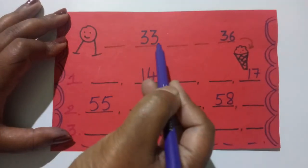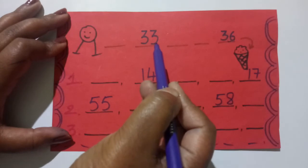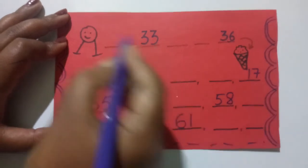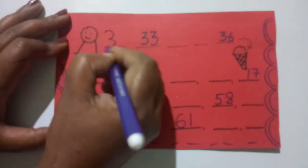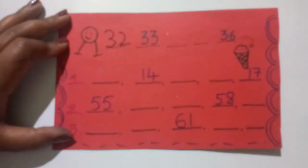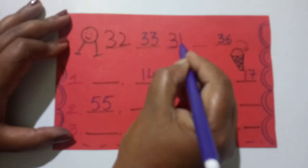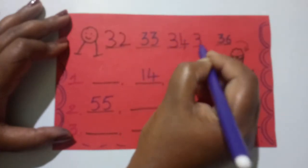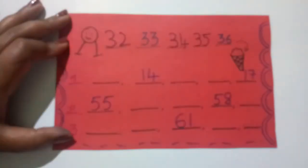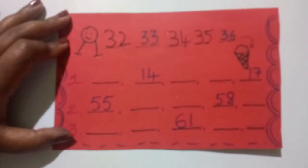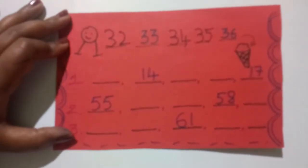Before 33. We have 3, right? Before 3, we will get 2. That means, it should be 32. Yes. 32, 33. Next, it is 34. Then, it is 35. Then, 36. Is it clear? 32, 33, 34, 35, 36.